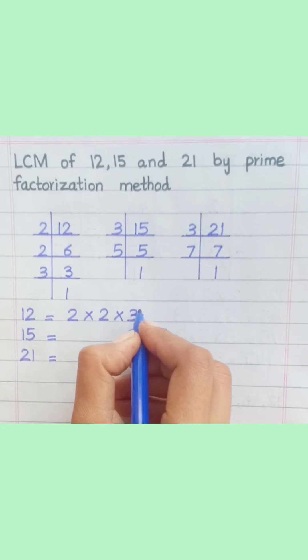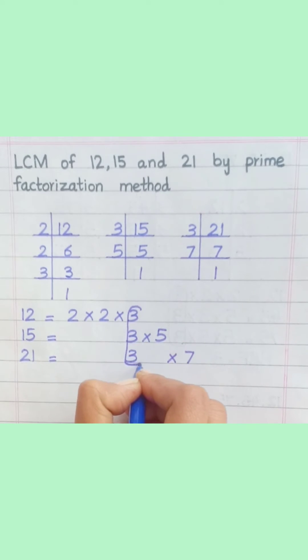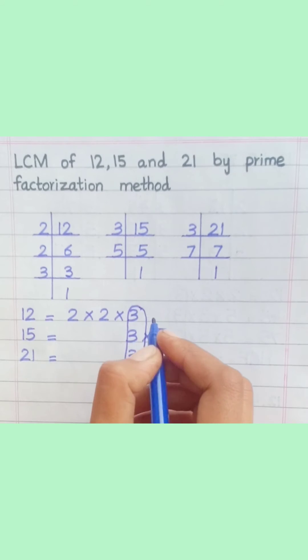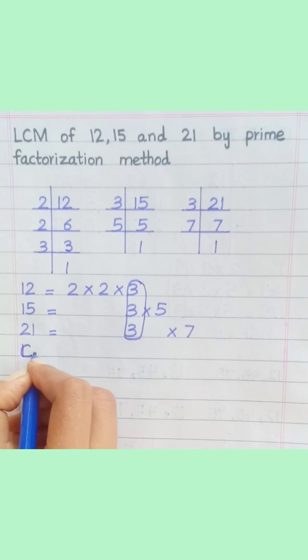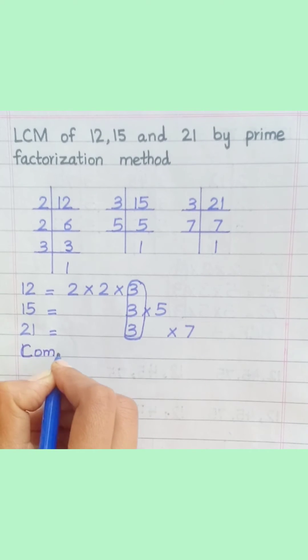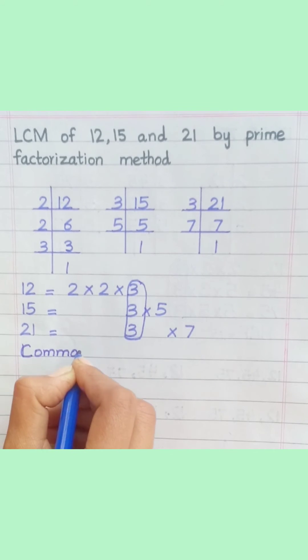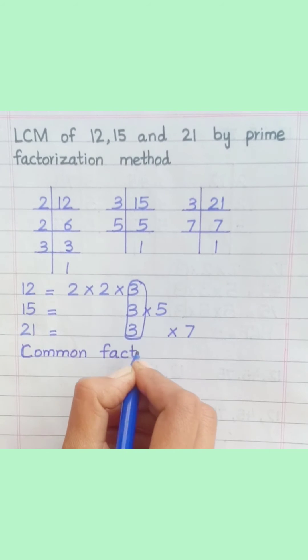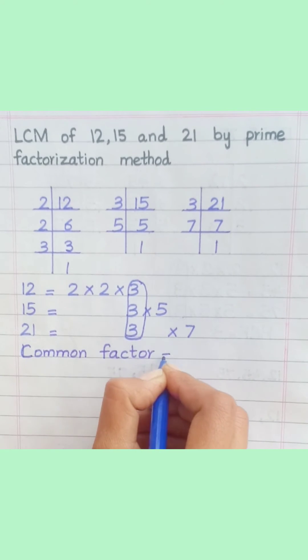Loop the factors that are common to all of the given numbers. The common factor equals 3.